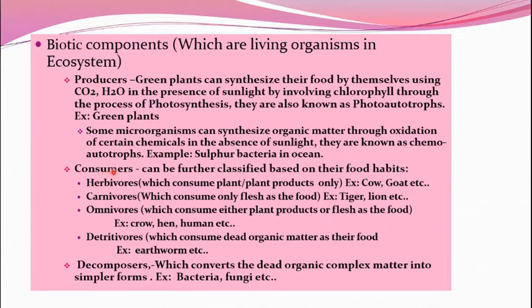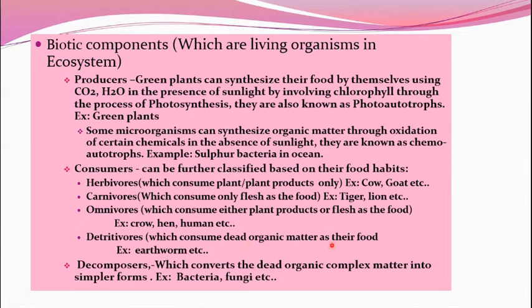Consumers can be further classified based on their food habits: herbivores, which consume only plant or plant products — examples are cow and goat; carnivores, which consume only flesh — examples are tiger and lion; omnivores, which consume either plant products or flesh — like crow and hen; and detritivores, which consume dead organic matter — examples are earthworm and termites.